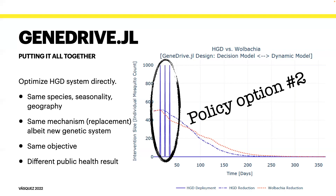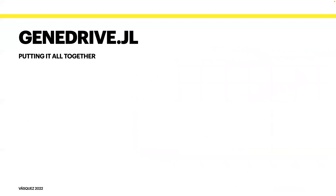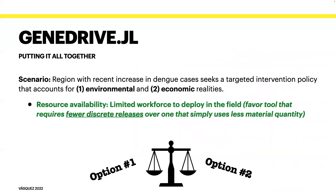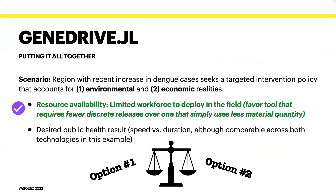New technology, new schedule of deployments. Putting it all together and returning to our scenario to select between the two options, we recall that our economic reality favored the tool with the fewest discrete releases. We now know that both technological options require only three when optimized using our model. Moving on to other factors, including perhaps the amount of material quantity used, it's also important to evaluate the public health result, which — while comparable across both outcomes — does have trade-offs from the perspective of the speed versus the duration of the intervention effect. This situation simply presents options to decision makers as modeled by the GeneDrive.jl software.